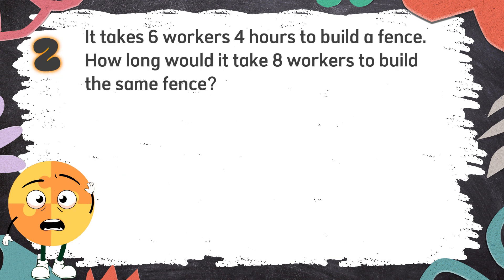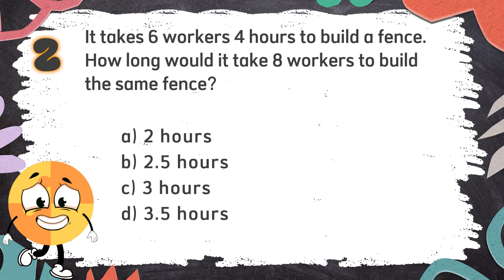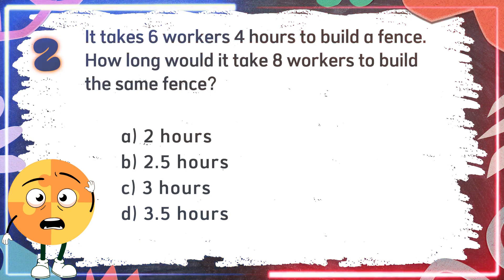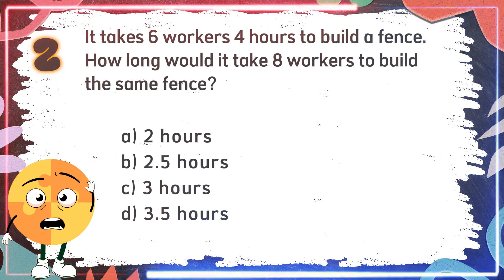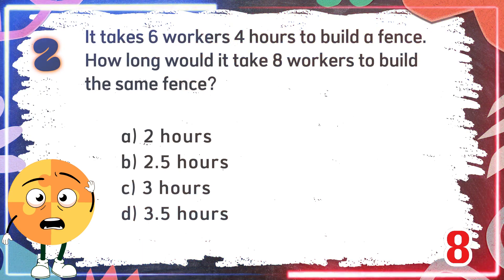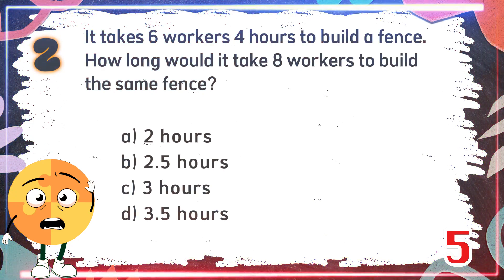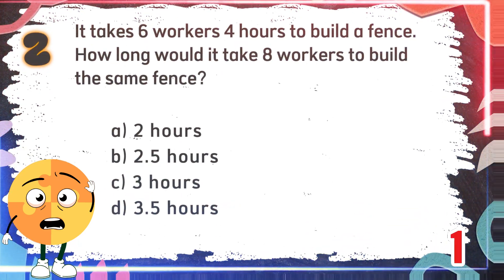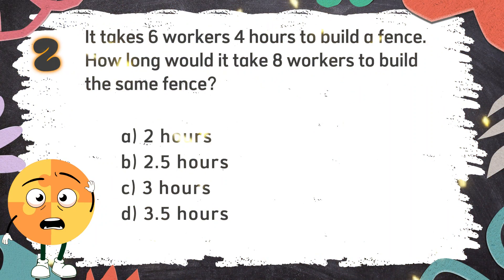Number 2: It takes 6 workers 4 hours to build a fence. How long would it take 8 workers to build the same fence? Again, it takes 6 workers 4 hours to build a fence. How long would it take 8 workers to build the same fence? The choices are: A. 2 hours, B. 2 and a half hours, C. 3 hours, D. 3 and a half hours. The correct answer is C. 3 hours.